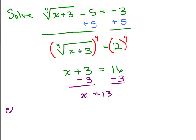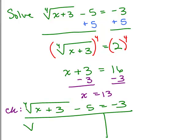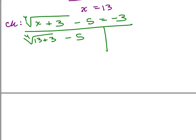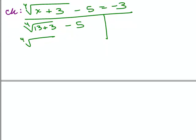Now we want to check it. So we want to put the original problem, 4th root of x plus 3 minus 5 equals negative 3, and we're going to plug in 13 for x. That gives us the fourth root of 16 minus 5. Fourth root of 16, you have to think, well, what number to the fourth is 16? That's 2, so this becomes 2 minus 5, and 2 minus 5 is negative 3.